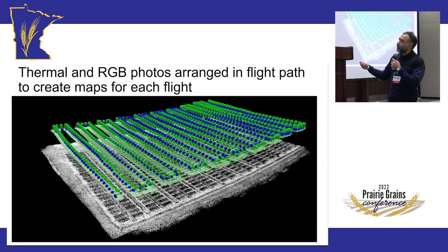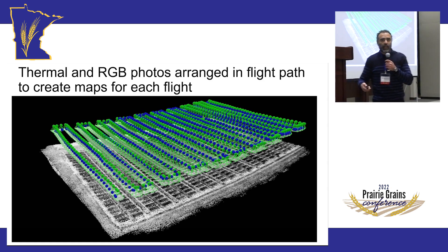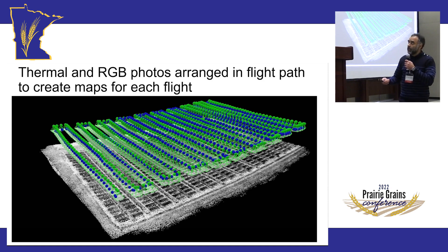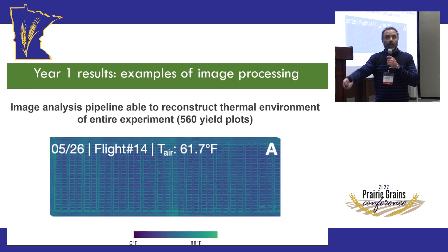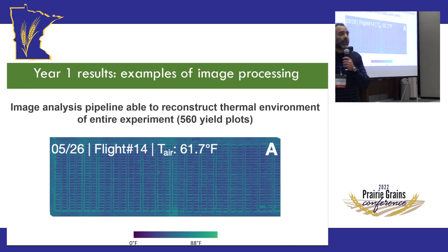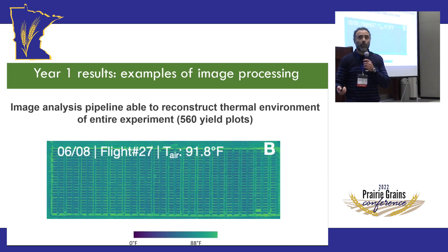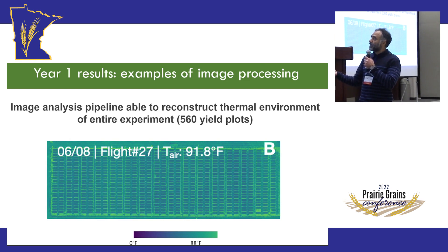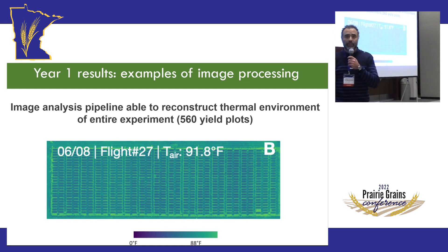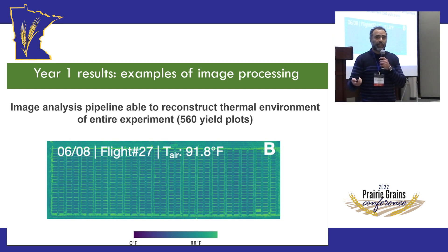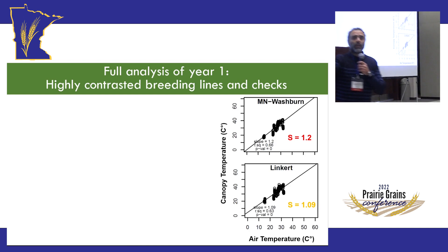Part of the procedure calls for stitching those images together based on the drone's flight path, with 3D rendering and corrections. This is an example of the entire trial of 560 yield plots. On a reasonably cool day versus a warmer day, you can already see some plots being slightly warmer than others — though you'll see the differences better numerically rather than visually.